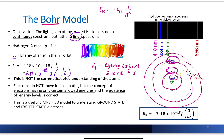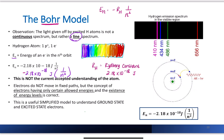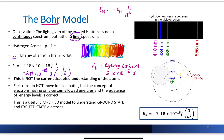The reason the Bohr model is not the currently accepted understanding is that we know electrons do not move in fixed paths — they don't travel specifically in a fixed circle around the nucleus. However, the concept of electrons having only certain allowed energies and the existence of discrete energy levels is correct. Although electrons don't travel in these exact circles, the overall concept is still very close to what we know to be true. The Bohr model is used because it's a simplified model useful for understanding ground state and excited state electrons.